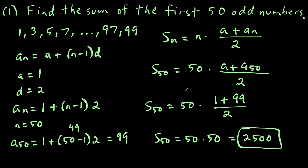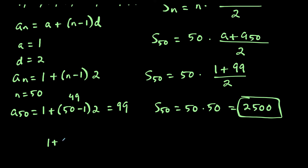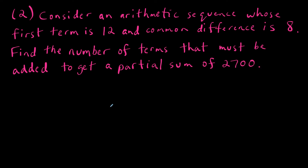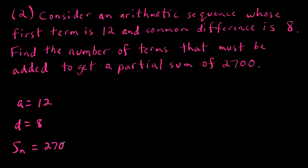We could check this by adding one plus three plus five all the way down to 99, but that would take a long time. Now let's look at a more abstract example. We have an arithmetic sequence where the first term is 12 and the common difference is eight, and we want to find the number of terms needed to reach a partial sum of 2700.